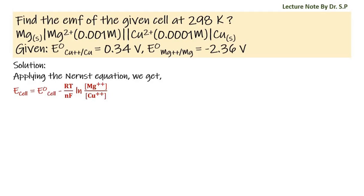given cell is equal to overall electrode potential of cell minus universal gas constant R temperature T by number of mole of electrons transferred n Faraday constant F ln molar concentration of reduced species by molar concentration of oxidized species.